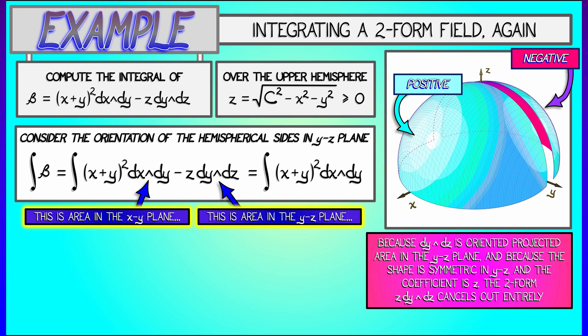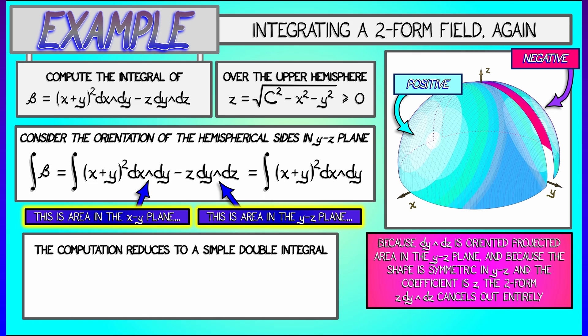That means we can completely ignore that second term in the two-form field beta. And the integral of beta over this hemisphere is really just the integral of quantity x plus y squared dx wedge dy.